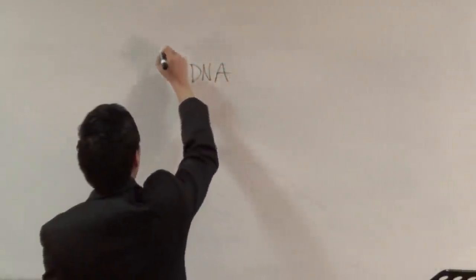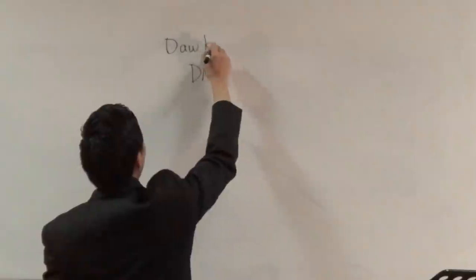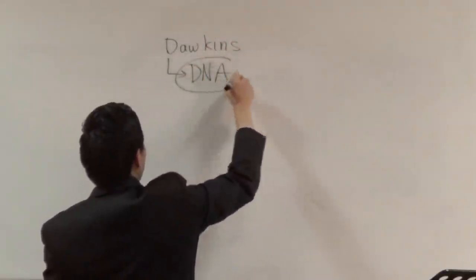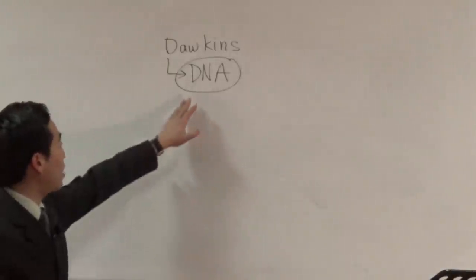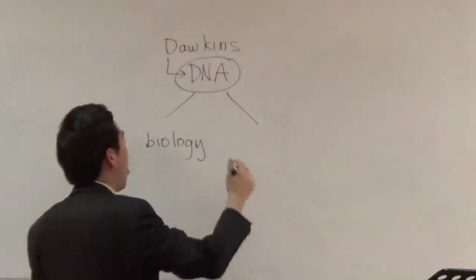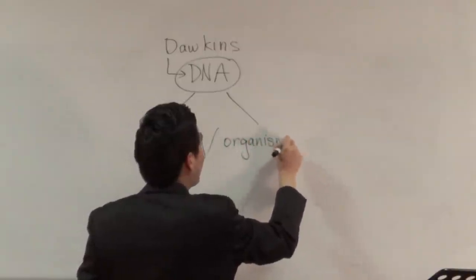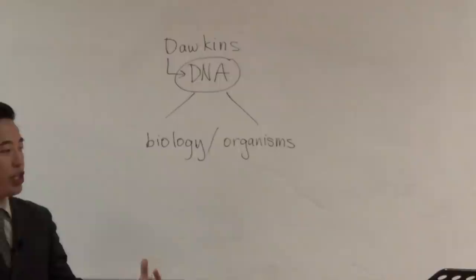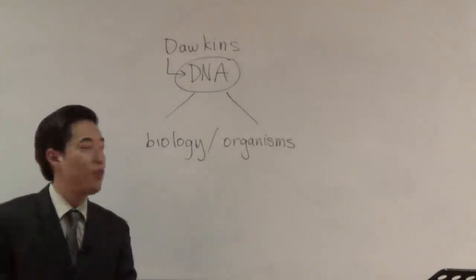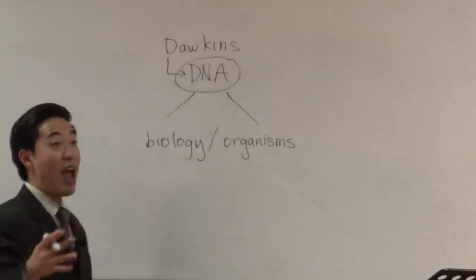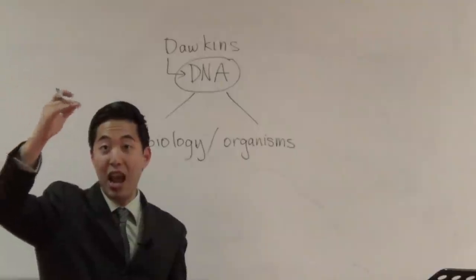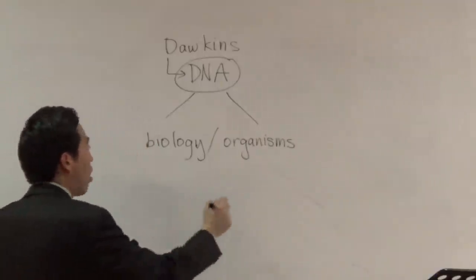Richard Dawkins once said that the greatest evidence for evolution, within a question and answer session at the University of California at Berkeley, is DNA. When Dawkins said DNA is the greatest evidence of evolution, he was pointing out that when you look at the pattern and the strands, if you look at all of biology, all of God's creation within our world today, it fits this family pattern of evolution — how the DNA pattern is set.